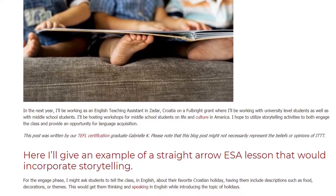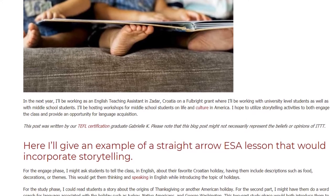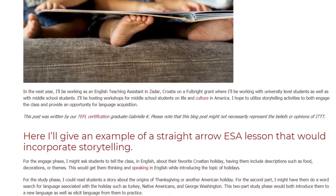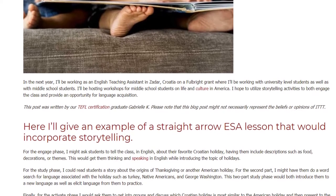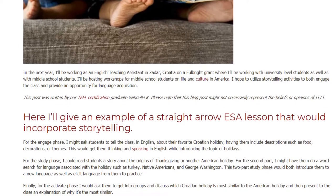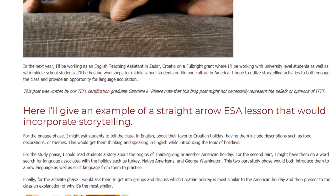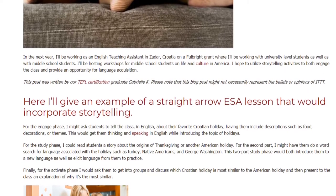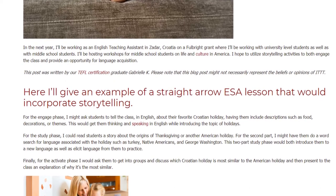Here I'll give an example of a straight arrow ESA lesson that would incorporate storytelling. For the engage phase, I might ask students to tell the class in English about their favorite Croatian holiday, having them include descriptions such as food, decorations, or themes. This would get them thinking and speaking in English while introducing the topic of holidays.